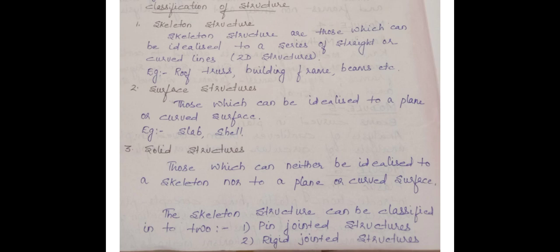The third type is Solid Structures. Solid Structures are those which can neither be idealized to a skeleton nor surface structure. Skeleton Structures can further be classified into two types: Pin Jointed Structures and Rigid Jointed Structures.